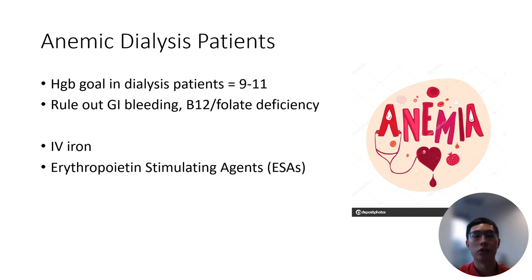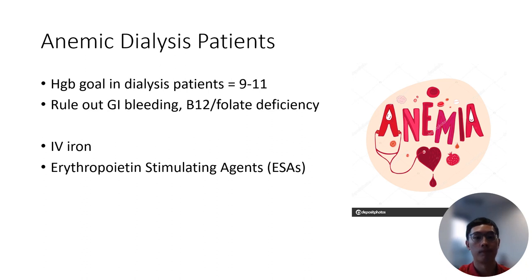Anemia is also very common in dialysis patients due to the lack of erythropoietin production that normally happens in patients with normal kidney function. It is important to note that our hemoglobin goals when treating dialysis patients with erythropoietin-stimulating agents or ESAs is lower than normal. Studies have shown that higher hemoglobin levels above 12 tend to result in a higher risk of stroke and thromboembolism, compared to the lower hemoglobin level goal of 9 to 11. One should always rule out more common causes of anemia such as GI bleeding and vitamin deficiencies before attributing somebody's anemia to chronic kidney disease. In addition to ESAs, we can also provide IV iron to dialysis patients through the dialysis machine, which helps us manage patients' anemia and prevent the need for more expensive blood transfusions in the future.